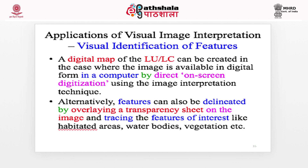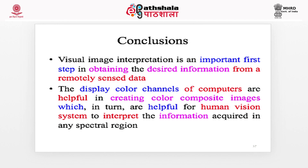The main application of visual image interpretation is to visually identify features present in images. A digital map of land use and land cover can be created where the image is available in digital form on a computer. This can be done by direct on-screen digitization using the image interpretation technique. Alternatively, features can also be delineated by overlaying a transparency sheet on the image and tracing features of interest like inhabited areas, water bodies, vegetation, etc. Visual image interpretation is an important first task for the user in obtaining desired information from remotely sensed images, and the display color channels or color guns in a computer system assist the interpreter in bringing object information in a colorful manner.